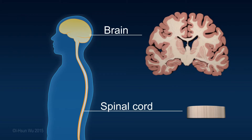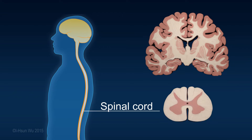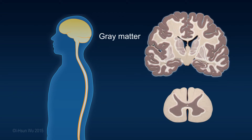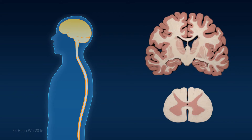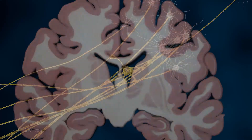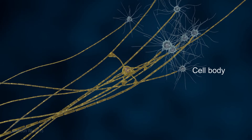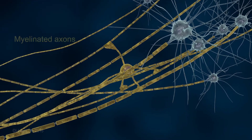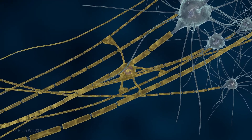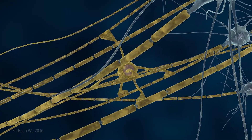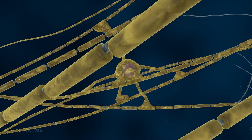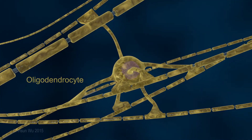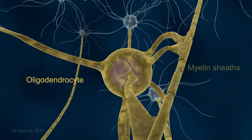The central nervous system, or CNS, comprises the brain and the spinal cord. The CNS is made up of gray matter and white matter. The gray matter contains most of the neuron cell bodies and the white matter contains myelinated axons. In the CNS, nerve fibers are wrapped by varying numbers of concentric layers, with the plasma membrane of the oligodendrocytes forming myelin sheaths.